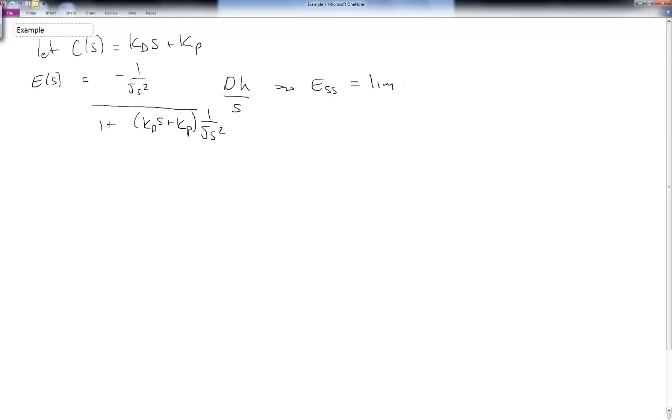So if we look at the steady state error, we have to take the limit of s times all of this. And I'm going to simplify. I have minus dh over s all over j s squared plus kd s plus kp. And now take that limit as s goes to zero. These two guys cancel each other out. And we're left with minus dh over kp. Notice this only goes to zero when kp goes to infinity, just as before.